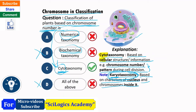When cell division happens, the nucleus divides and chromosomes move. If classification uses chromosomes outside the nucleus — during cell division like mitosis or meiosis — it is cytotaxonomy. But if chromosomes are present inside the nucleus when the cell is in a resting state, not dividing, and we use that for classification, then it is known as karyotaxonomy.